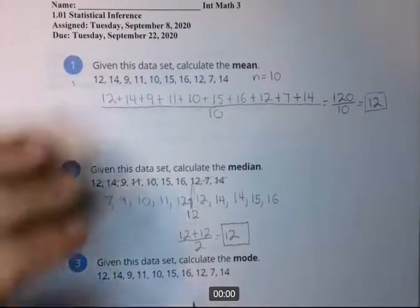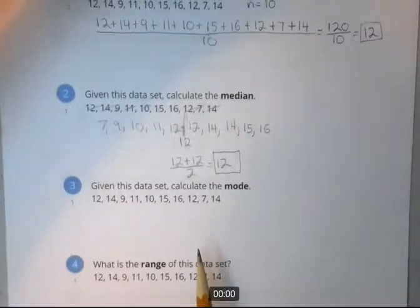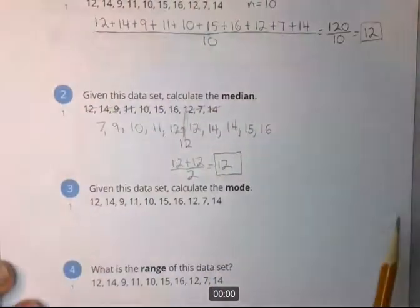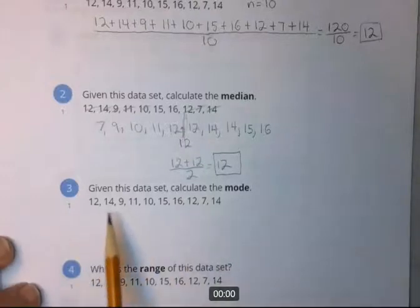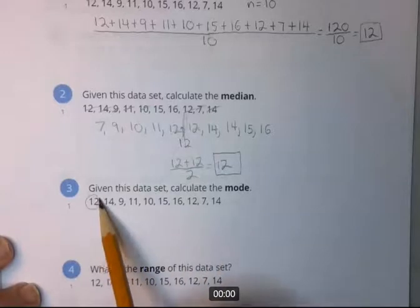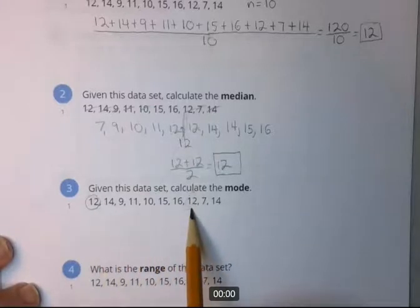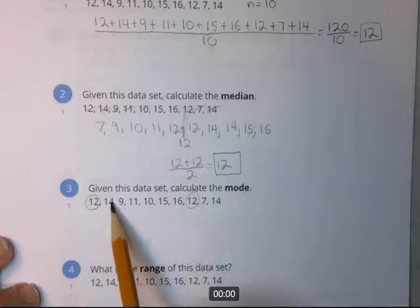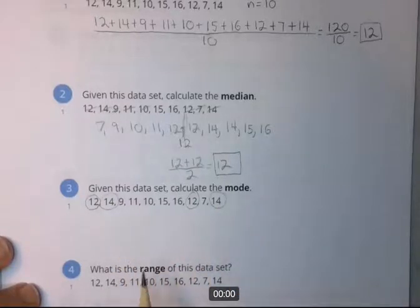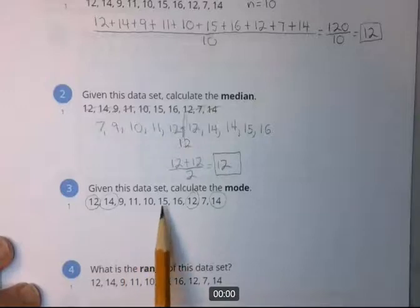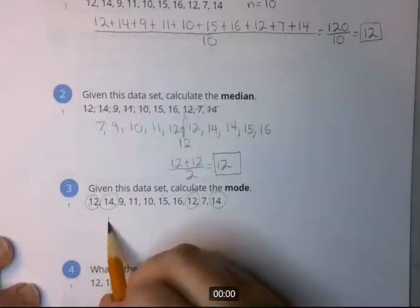Alright, the mode. For mode, you do not need to put the numbers in order. You're just simply looking for the numbers that appear the most times. And if you look through this set, we have a 12 there, another 12 there. There's a 14, another 14. So there's two 12s and two 14s, and we don't see any other number that appears more than once. So that means the modes.